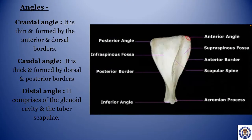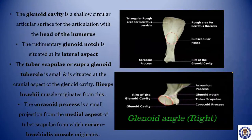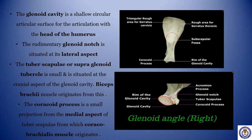Angles. Cranial angle: it is thin and formed by the anterior and dorsal borders. Caudal angle: it is thick and formed by the dorsal and posterior borders. Distal angle: it comprises the glenoid cavity and tubus capillae. The glenoid cavity is a shallow circular articular surface for articulation with the head of the humerus. The rudimentary glenoid notch is situated at its lateral aspect. The tubus capillae or supraglenoid tubercle is small and situated at the cranial aspect of the glenoid cavity, from which biceps brachii originates. The coracoid process is a small projection from the medial aspect of the tubus capillae, from which coracobrachialis muscle originates.